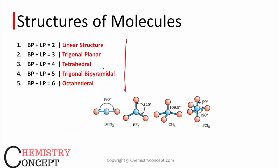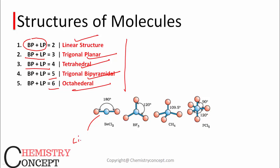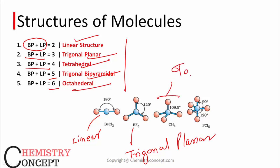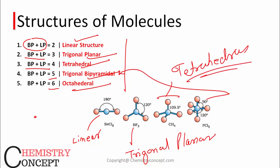Now, the structure of molecules. There are five different main structures. Using the formula LP + bond pair: if the sum is 2, the structure is linear; if 3, trigonal planar; if 4, tetrahedral; if 5, trigonal bipyramidal; if 6, octahedral. The linear structure has a 180-degree bond angle, trigonal planar has 120 degrees, tetrahedral has 109.5 degrees, and trigonal bipyramidal and octahedral have their respective geometries.